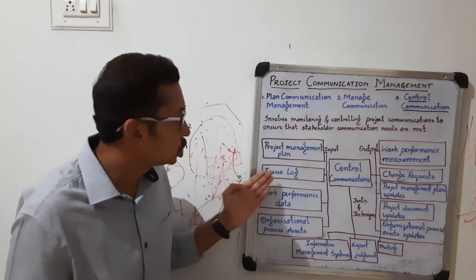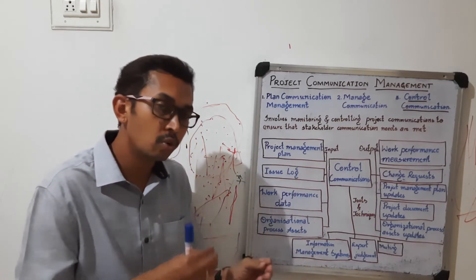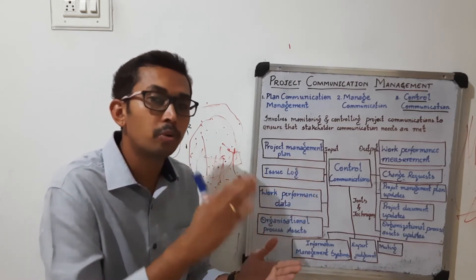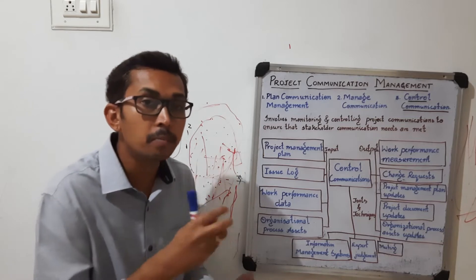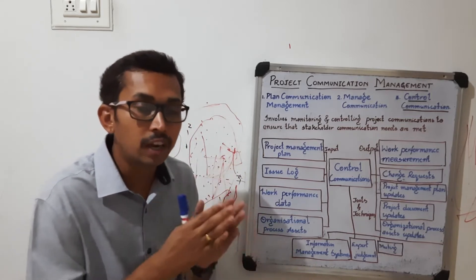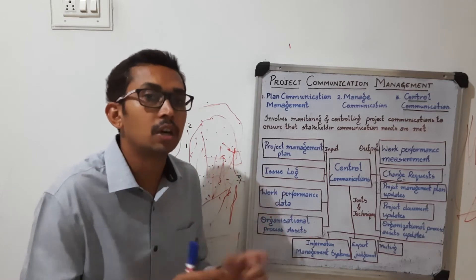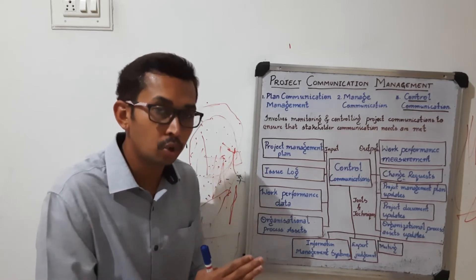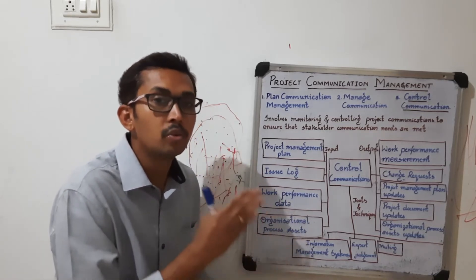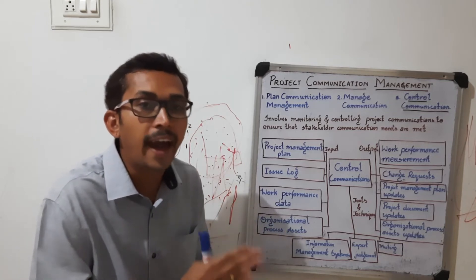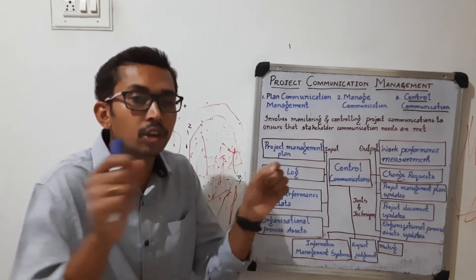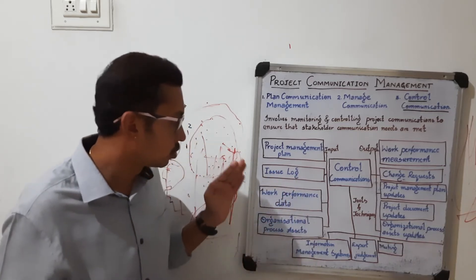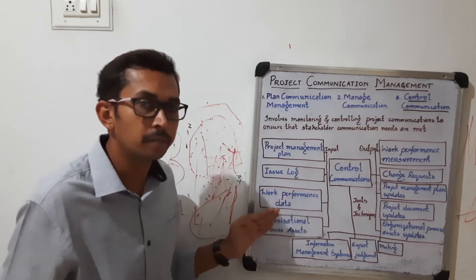The next input is the issue log. When you start and execute a project, many problems or issues arise. These are documented in a register or spreadsheet, along with the solution or action plan being taken. That is what we call the issue log.